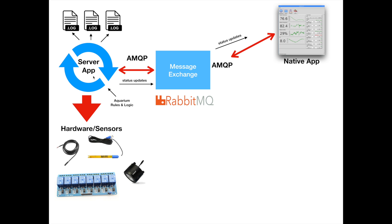My server runs in its loop and every time it has something to share, it pushes out a status update via AMQP — the Advanced Message Queuing Protocol. RabbitMQ speaks AMQP, so all status updates published from the server end up on the message exchange. The exchange holds those messages and forwards them out to any subscribers, which in my case is my native application. In the opposite direction, if my application has anything to tell the server, it never talks directly to the server — it posts it onto the message exchange, which forwards it to the server. The server applies the change and broadcasts out the status update, which makes its way back to the native application.